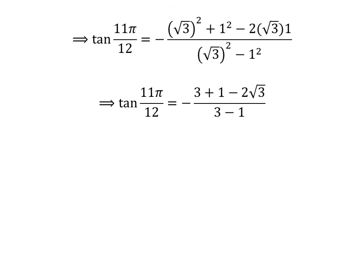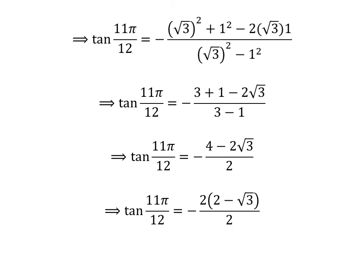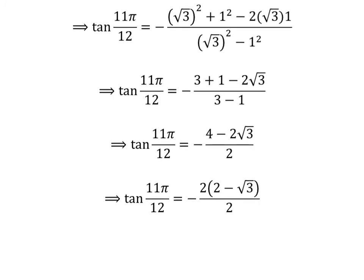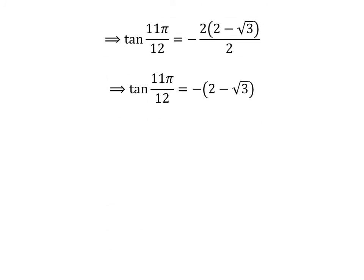Square of square root of 3 is 3 and square of 1 is 1. So, tangent of 11 times pi upon 12 is equal to minus of 3 plus 1 minus 2 times square root of 3 upon 3 minus 1. Further simplification gives us tangent of 11 times pi upon 12 is equal to minus of 4 minus 2 times square root of 3 upon 2. Taking out the common factor 2 in the numerator and canceling with the denominator gives us tangent of 11 times pi upon 12 is equal to minus of 2 minus square root of 3. Opening up the bracket gives us tangent of 11 times pi upon 12 is equal to square root of 3 minus 2.